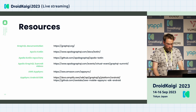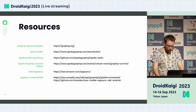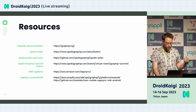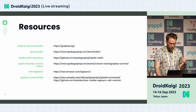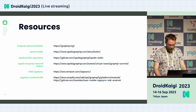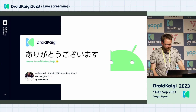For resources, you can check the GraphQL.org general documentation, the Apollo Kotlin documentation and its repository, videos from the Apollo GraphQL Summit, and if you're using AWS, the AppSync resources. Thank you very much, I hope you enjoyed the talk — I'll be around if you have any questions.